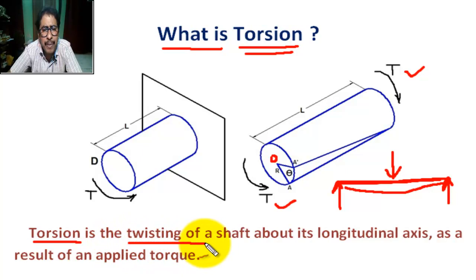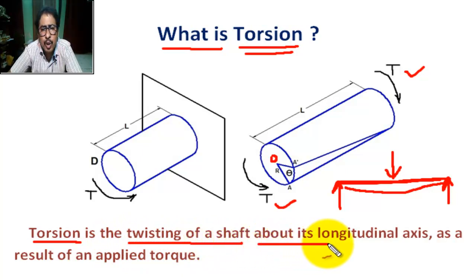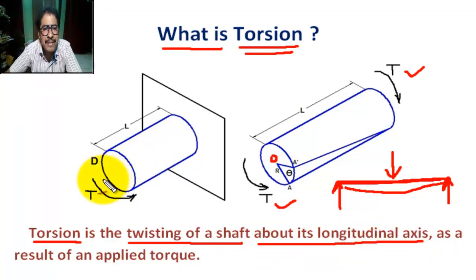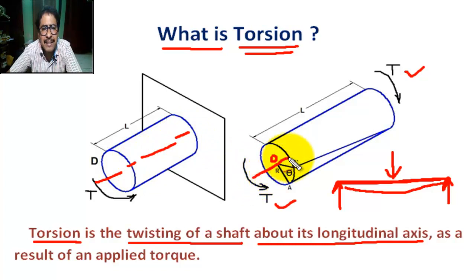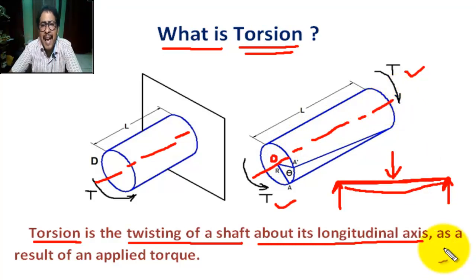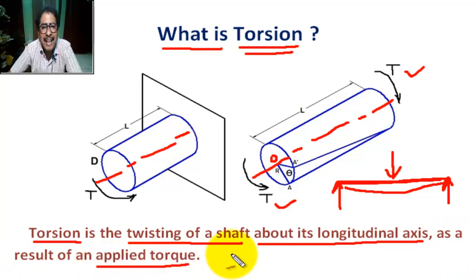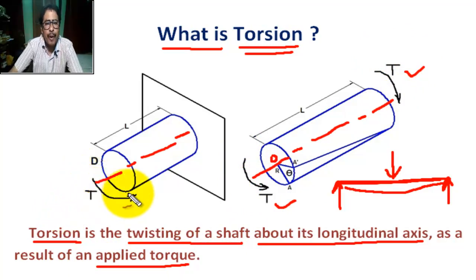Torsion is the twisting of a shaft about its longitudinal axis — that is, the X-axis — as a result of an applied torque.